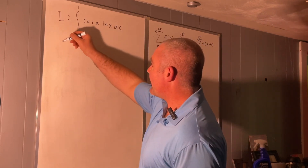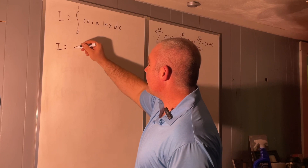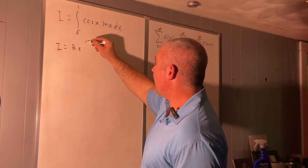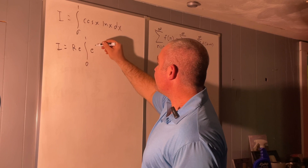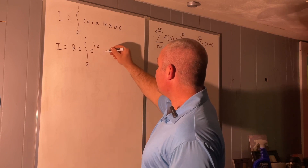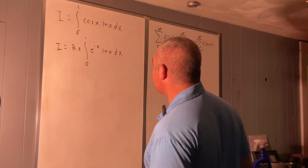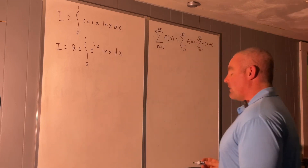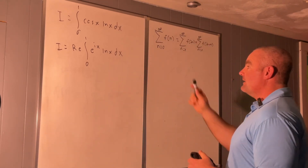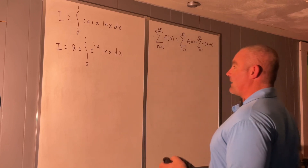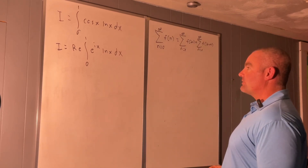We can write this as I is equal to the real part of the integral from 0 to 1 of e to the ix natural log x dx. You will need to be familiar with Euler's identity in order to know why that's true, but I'm not going to go over that today. That is true.